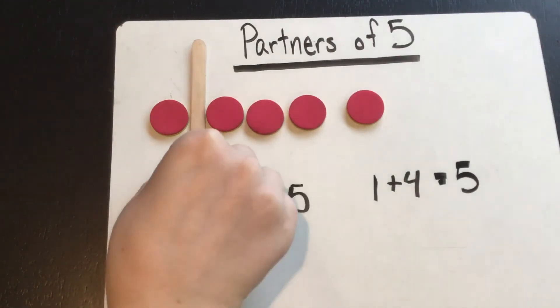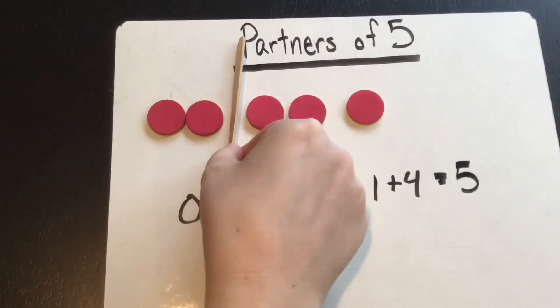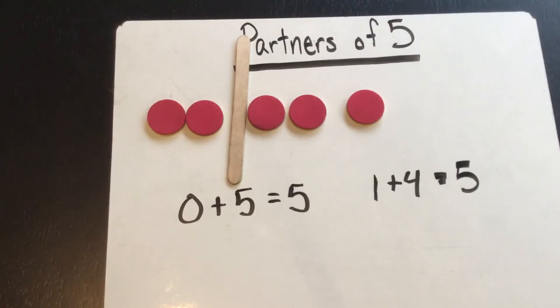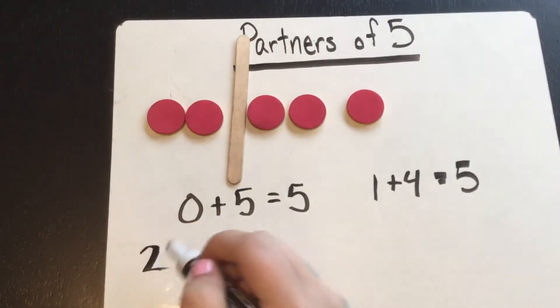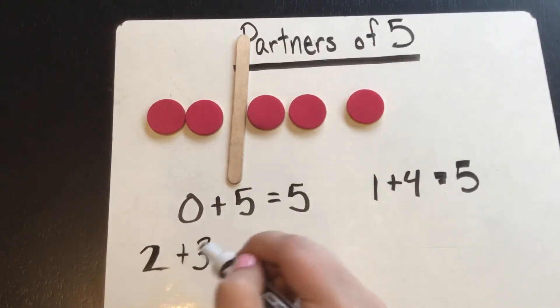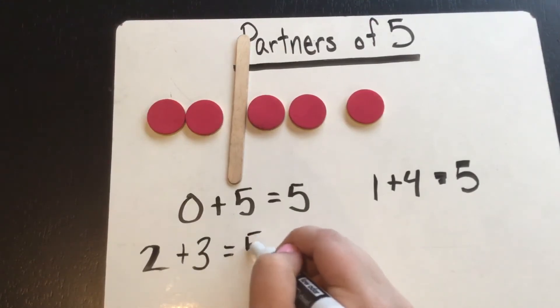We're going to move the break apart stick over one more time. Think about what the partners are. It's two and three. The equation would be two plus three equals five.